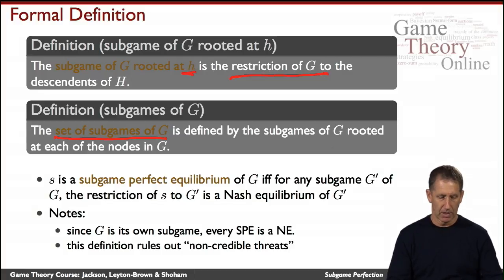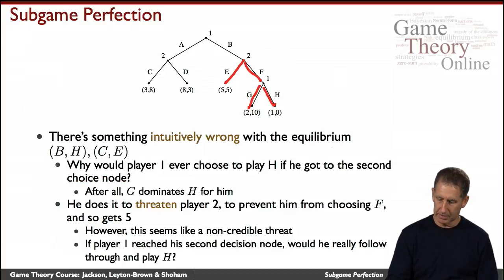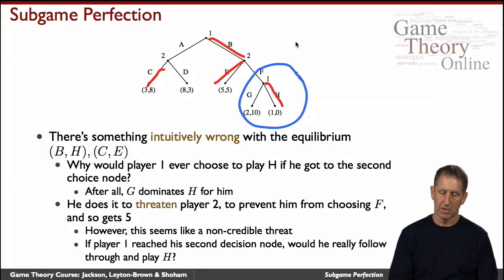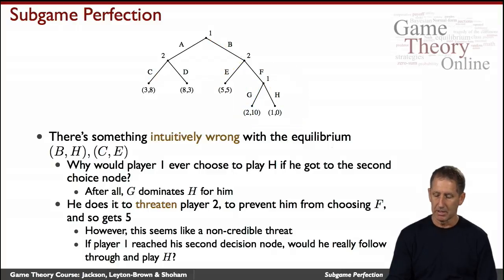If we look at the Nash equilibrium B-H-C-E, we just saw it's a Nash equilibrium. But among the subgames of this game is this sub-tree here. It's a game of a single player, Player 1, and the restriction of this Nash equilibrium is simply that action of going H, but this is not an equilibrium in this very simple tree because there's a profitable deviation to G for the player. So while it's a Nash equilibrium of the whole tree, its restriction to the sub-tree here is not a Nash equilibrium, and therefore this Nash equilibrium is not subgame perfect.